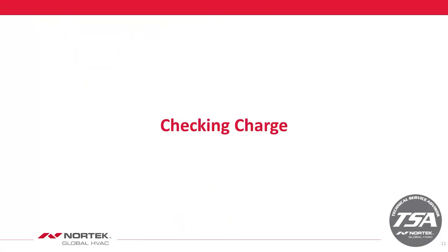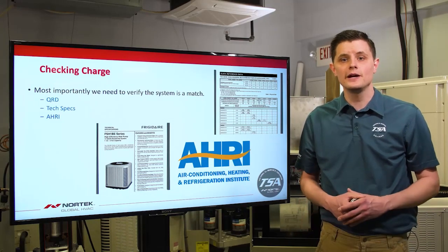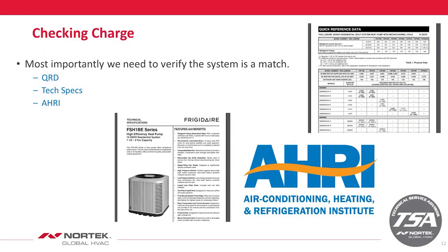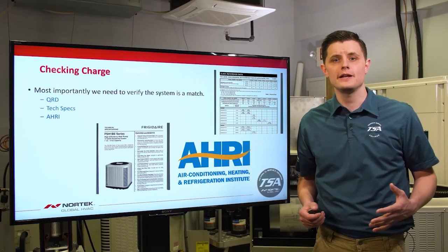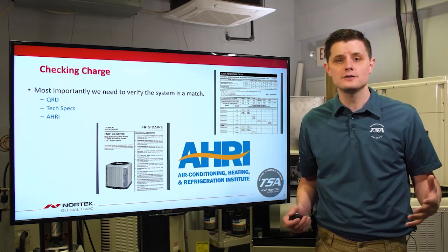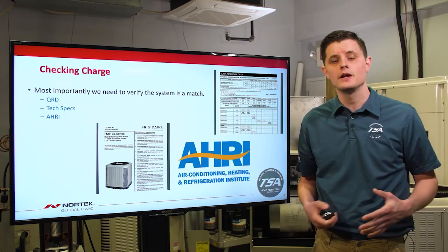Now let's look at checking charge. First, make sure the system you're working on is a proper match. There are three ways to verify: the QRD on our literature library, the tech spec of the condenser, or the AHRI website. On the AHRI website, use a base model number — if you get too detailed with the full model number it may limit the matches that auto-populate. Start with the base series number and branch off from there.